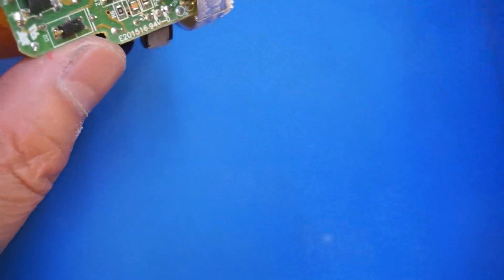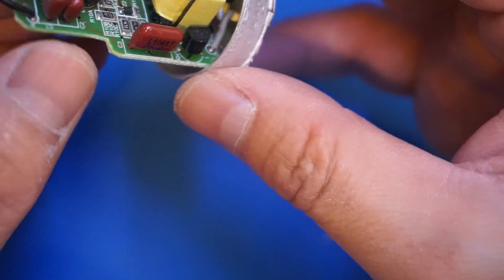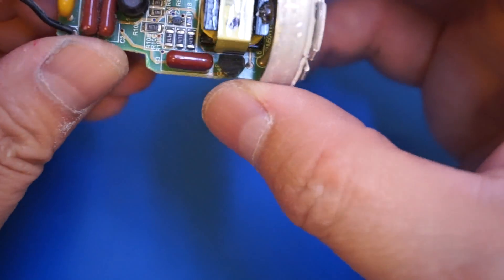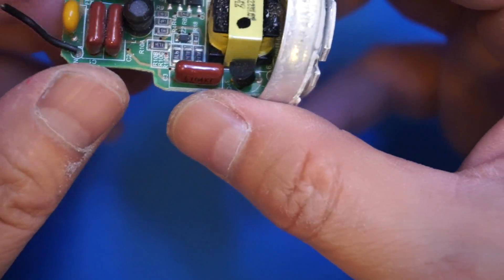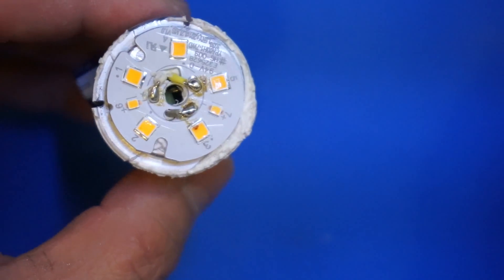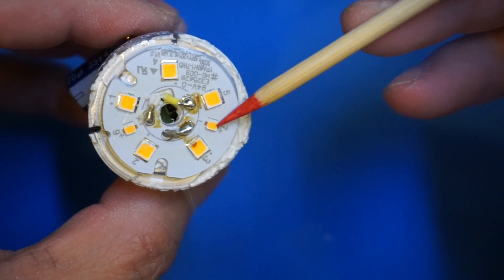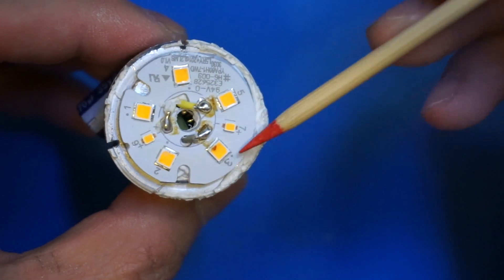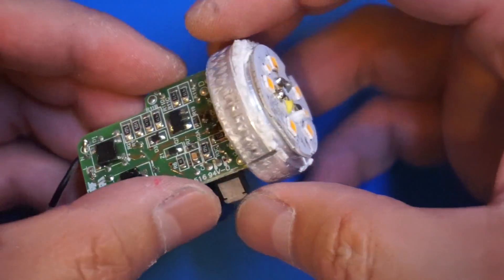Because these are using only discrete components, clearly there's no power factor correction circuitry inside. So I wondered what the power factor is for this kind of lamp, which probably won't be that good, which we can take a look in just a little bit. Now, I'm tempted to power this up to take a look at why we have two smaller LEDs right here in addition to the five larger ones. So give me a moment, I'm going to solder some wires and we will take a look.